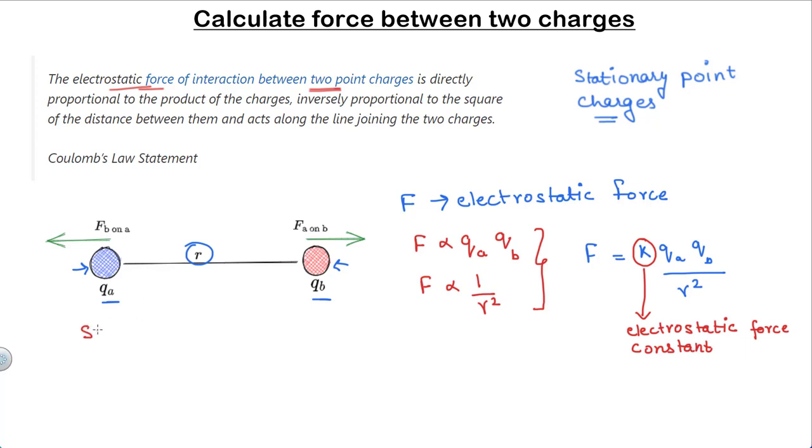In SI units, the value of this constant K equals 1 upon 4 pi epsilon naught, which is approximately 9 times 10 to the power 9 newton meter square per coulomb square, where epsilon naught is the permittivity of free space or vacuum.